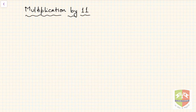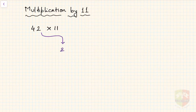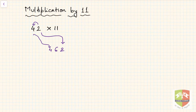Let us start with the number 42 and multiply it by 11. How does this technique work? Simply take the units digit 2 and write it on the right. Then add 2 to 4 to get 6, write 6 in the middle, and put the 4 on the left. So the answer is 462. You can verify this with a calculator.